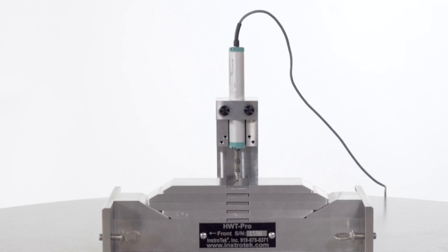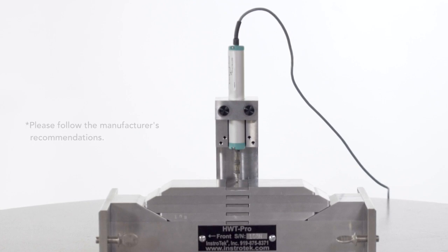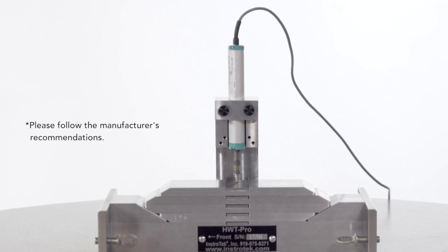The HWT Pro displacement calibrator is an optional jig used to calibrate the Hamburg's LVDT and height sensors. A simple calibration process adjusts the linearity of the LVDT and assures accurate rut depth measurement.